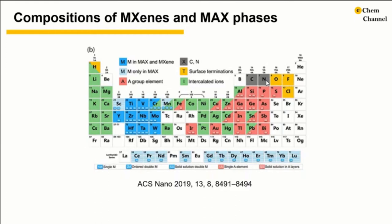The gray color marks the X elements. There is an ongoing attempt to produce 2D borides and thereby add another X element to the system. Various ions can reversibly intercalate and de-intercalate into the interlayer of MXene. The green background shows the cations that have been intercalated into MXenes to date.